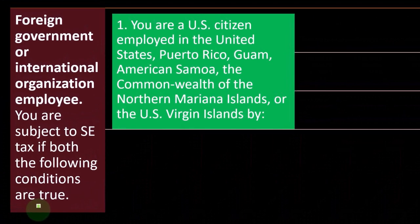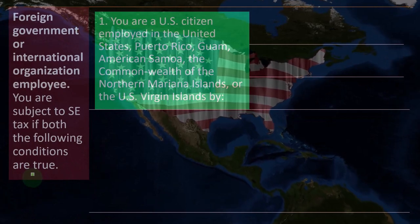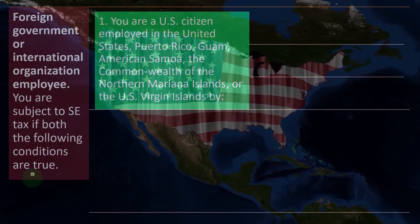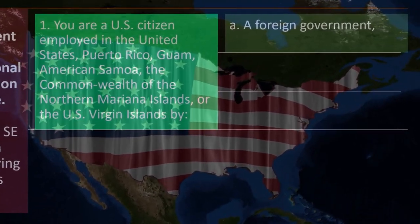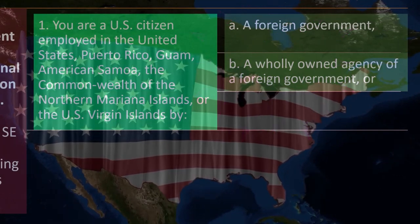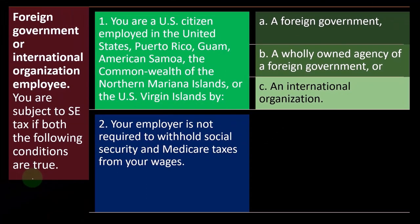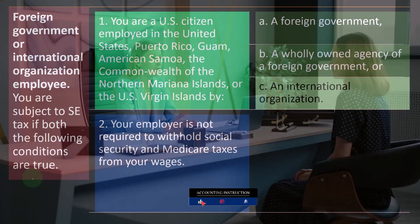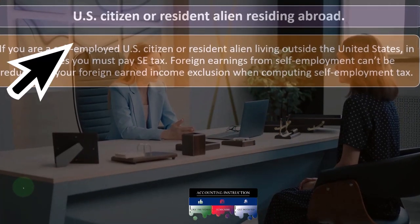For foreign government or international organization employees: you are subject to SE tax if you are a US citizen employed in the United States, Puerto Rico, Guam, American Samoa, the Commonwealth of Northern Mariana Islands, or the US Virgin Islands by (a) a foreign government, (b) a wholly owned agency of a foreign government, or (c) an international organization, and your employer is not required to withhold social security and Medicare taxes from your wages.